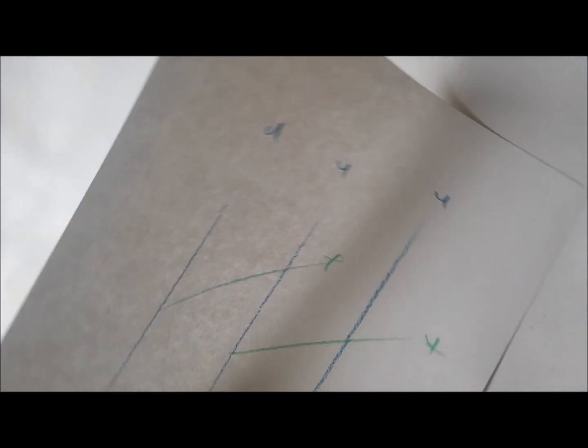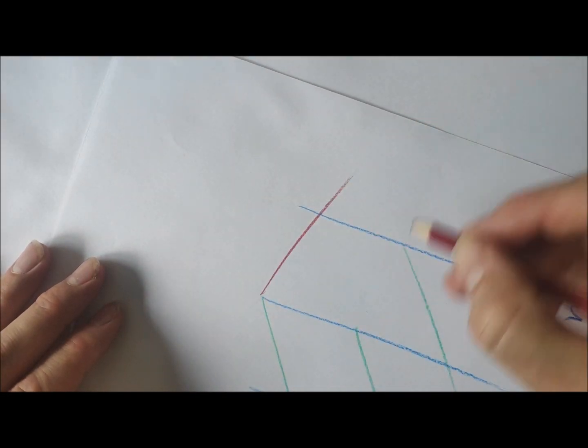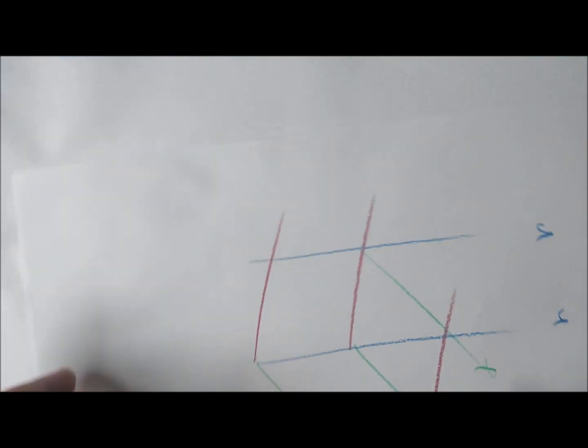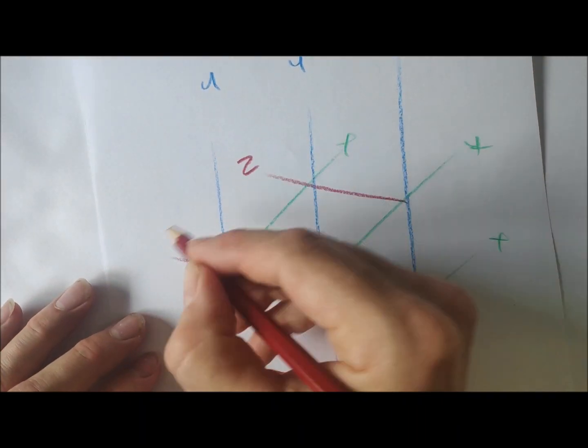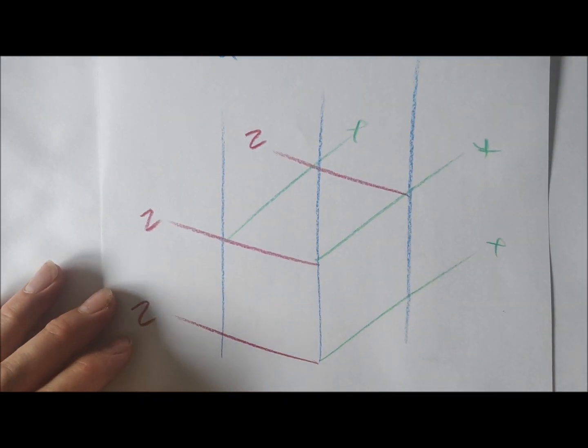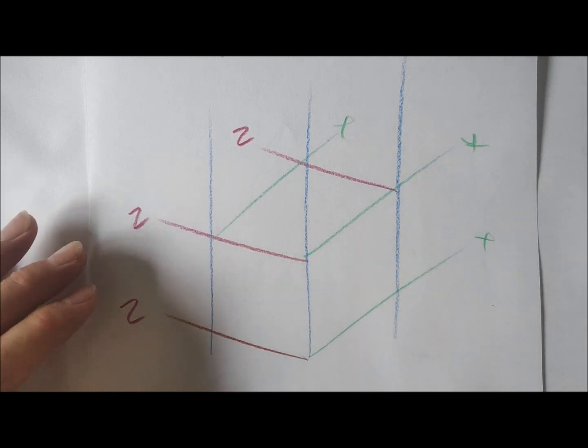And you should therefore be able to do lines going off in the equal and opposite direction, like this, to show the idea of Z-depth. And what you should see, hopefully, from doing it like that, is that you should quite quickly be able to create three-dimensional cubes.